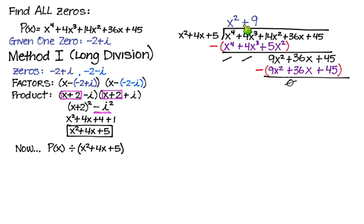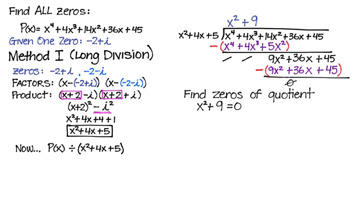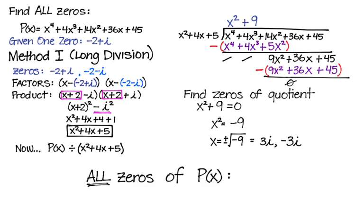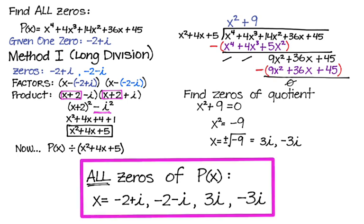That means x squared plus 9 is the other factor. These two factors — the divisor and the quotient — when multiplied give you the dividend, the original polynomial. All we need to do now is find the zeros of the quotient. We subtract the 9, take the square root, and we get 3i and negative 3i. So all four zeros are: negative 2 plus i, negative 2 minus i, 3i, and negative 3i — none of them are real, meaning there are no x-intercepts. This polynomial does not cross the x-axis.